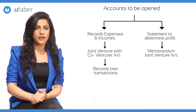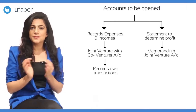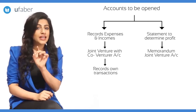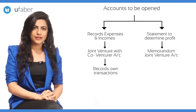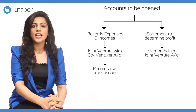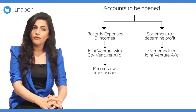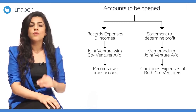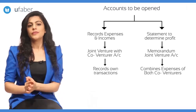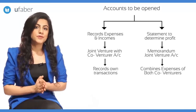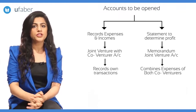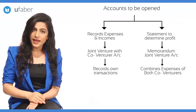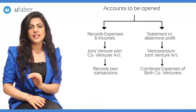Therefore, a rough statement is prepared by the co-venturers for determination of venture profit, called the Memorandum Joint Venture Account. Unless this memorandum account is prepared, the venturer cannot compute venture profit. This account is used for calculation of profit or loss by combining all expenses and income of the joint venture, which helps to ascertain the share of profit of each co-venturer.